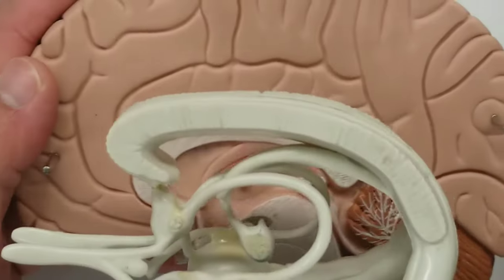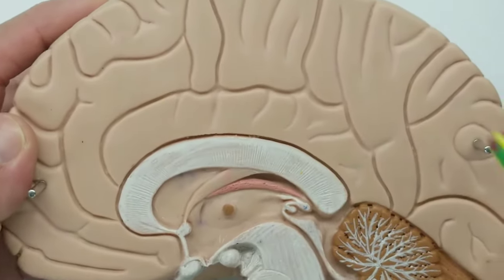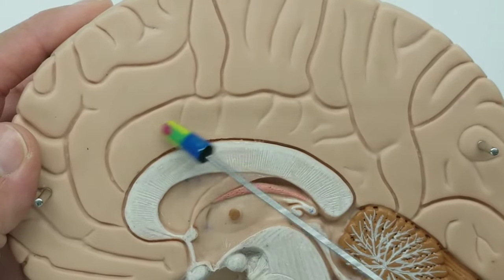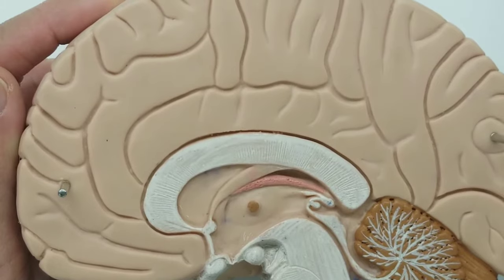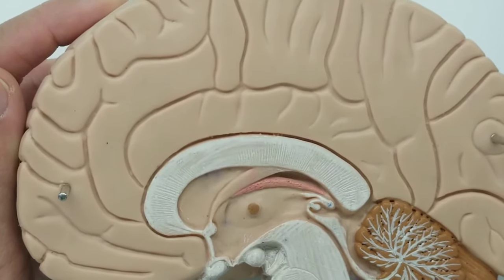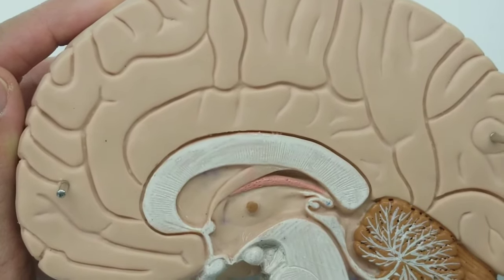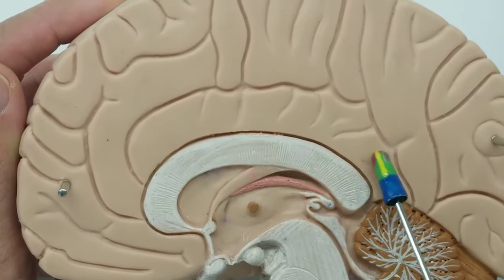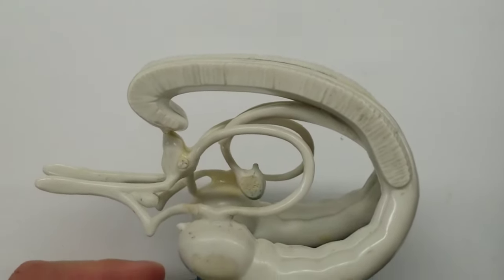One thing that you can actually see better on a real brain, well, a model of a real brain. Surrounding the corpus callosum, you have the cingulate gyrus. The cingulate gyrus is generally important for regulating emotions and reward. One thing that it's involved in is things like addiction, because it's involved with the reward system.